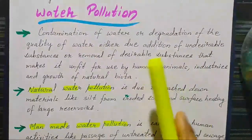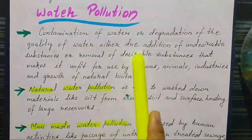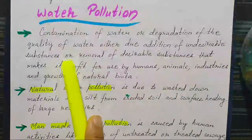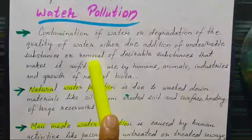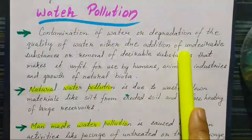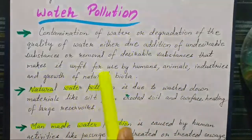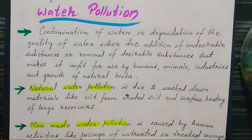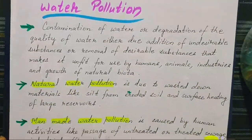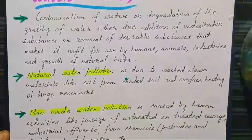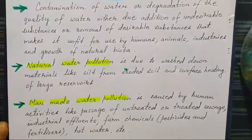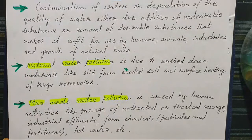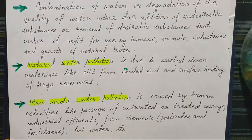Water pollution is the contamination of water or degradation of the quality of water, either due to addition of undesirable substances to water or removal of desirable substances from the water. By doing this we make the water unfit for use by humans, animals, industries, and growth of natural biota — all living forms.